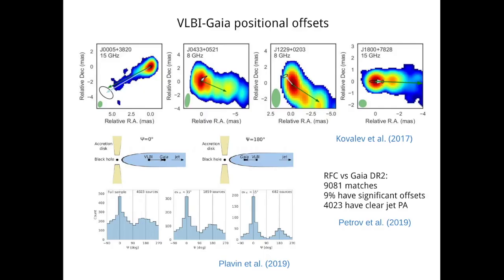My collaborators in this work have recently published several papers on the offsets between VLBI and Gaia positions of AGN. We have cross-matched the radio fundamental catalog and the Gaia catalogs. What we have found is that there are over 9000 common sources between these catalogs, and 9% of these sources have significant offsets between their positions in the radio and optical. Here on top of the slide you can see four examples of such offsets. The black ellipses correspond to radio and optical positions from the two catalogs.